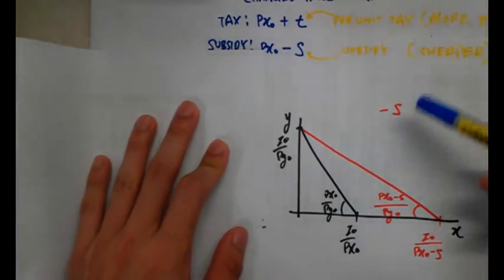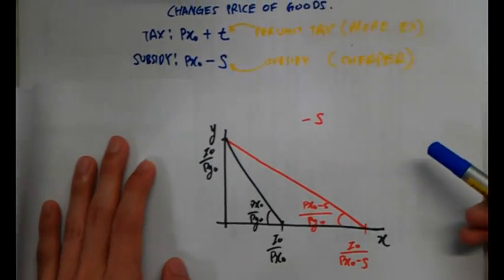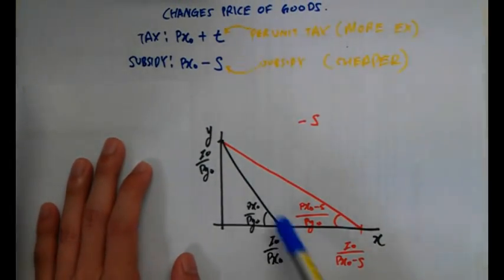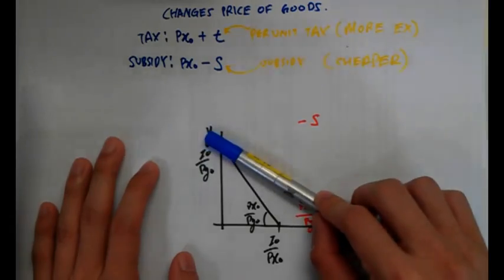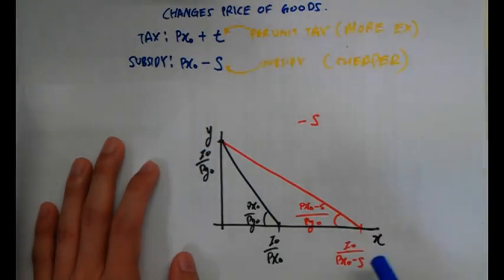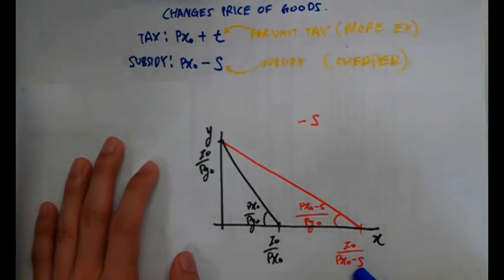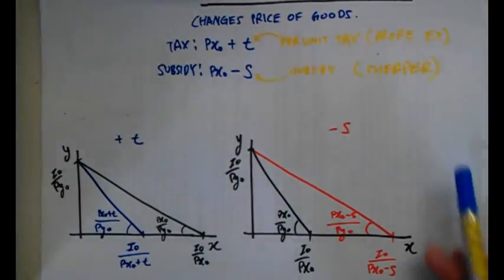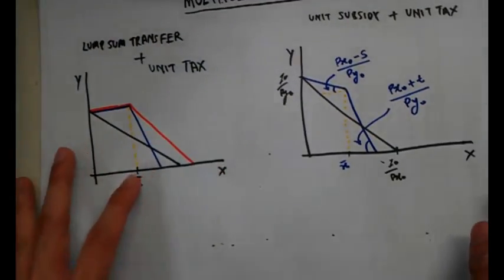With a subsidy, the price of X is lower, so the individual can buy more and real income effectively increases — the budget constraint rotates outwards. The real income notation becomes I-naught over (PX-naught minus s), where s is the subsidy.